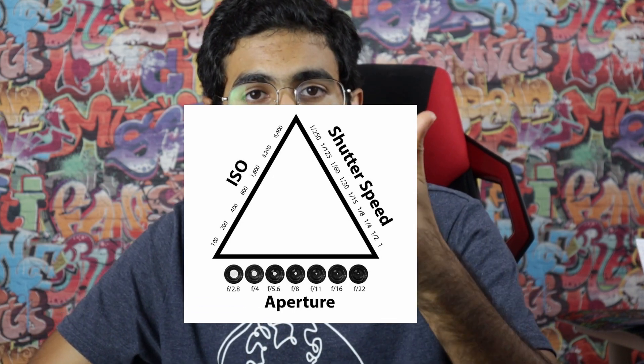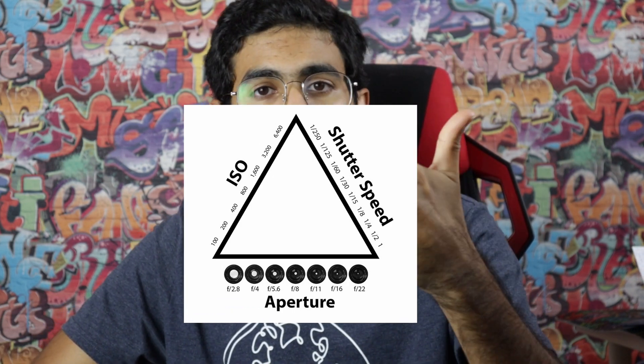Welcome to the Speed Reels. We already discussed the first two components of the exposure triangle — shutter speed and aperture. I recommend that you watch my videos on those two things; I'll leave links down in the description below. But today we talk about the third component, which is ISO. What the hell is ISO?